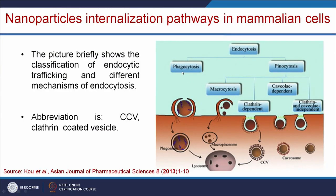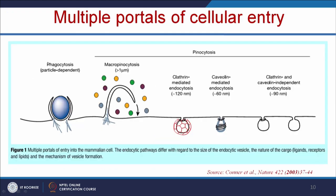Endocytosis is divided into phagocytosis and pinocytosis. Phagocytosis is the cell eating process and pinocytosis is the cell drinking process. Under pinocytosis, there are subclasses: macropinocytosis, clathrin-dependent, caveolae-dependent, and clathrin- and caveolae-independent endocytosis. Phagocytosis is particle-dependent. For macropinocytosis, the size of the vesicle is more than 1 micrometer; for clathrin-mediated endocytosis the vesicle size is 120 nanometers; for caveolae-mediated endocytosis the size is 60 nanometers; and for clathrin- and caveolae-independent endocytosis the vesicle size is 90 nanometers.